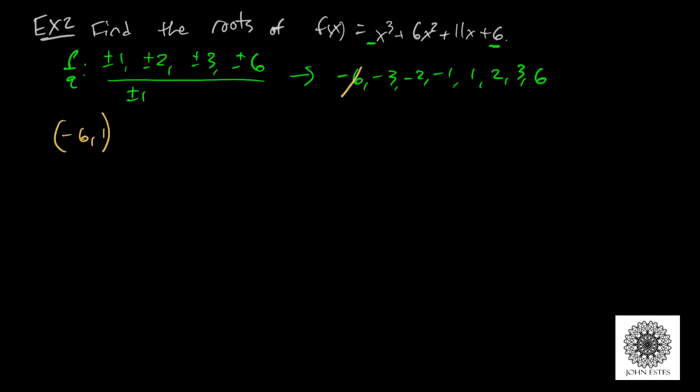So negative 6 and 1 are not included in this answer. That automatically eliminates negative 6, 1, and since 2, 3, and 6 are bigger than 1, all those get eliminated as well. That means negative 3, negative 2, and negative 1 are the only candidates. Let's see if any of those work.